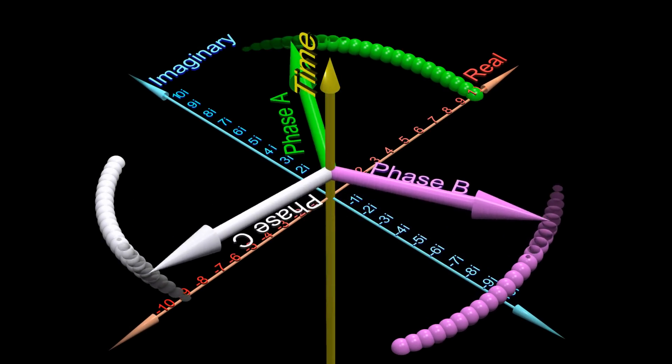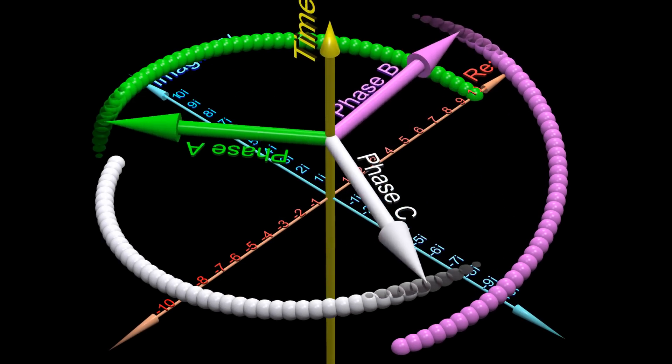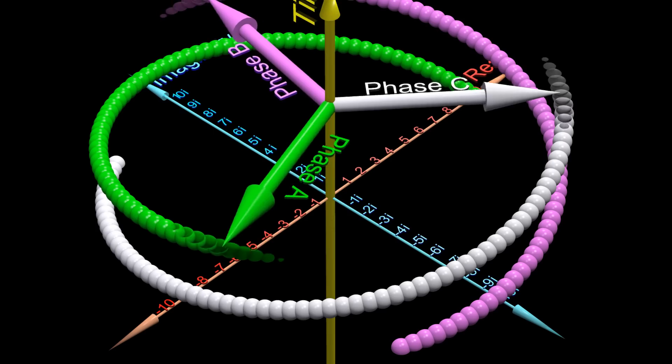Phasor diagrams can be used to describe all AC voltages and AC currents.